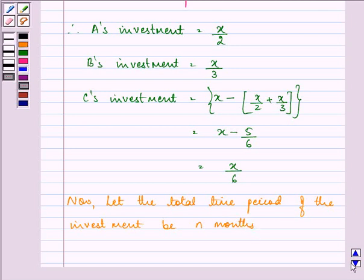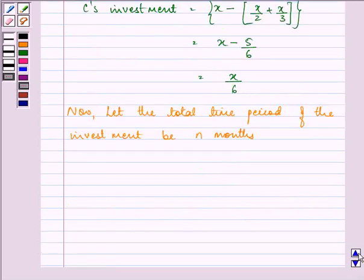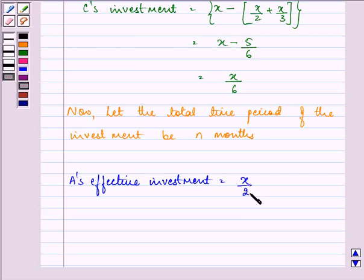Now, it's given to us in the question that A is investing half of the capital for half of the period. So, half of the capital for half of the period. That will be NX by 4.